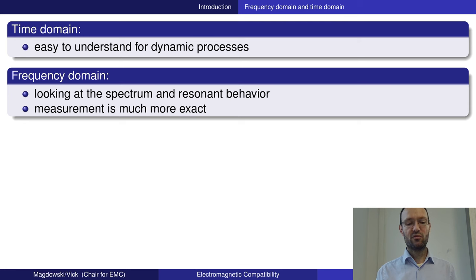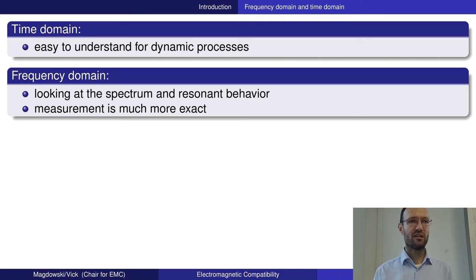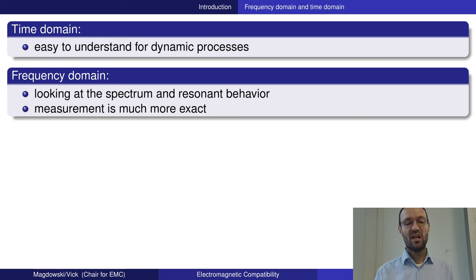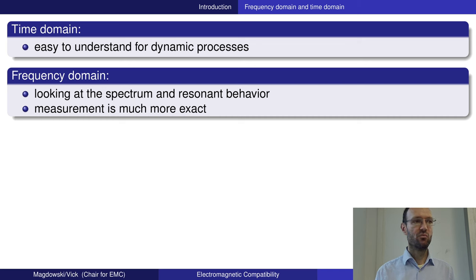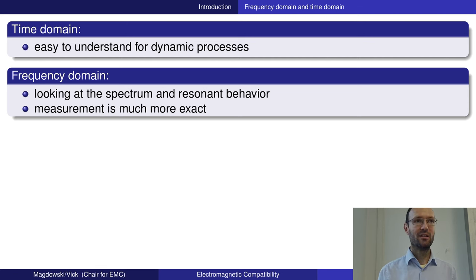If you have resonant systems like an RLC circuit, a cavity resonator, or a filter, it's usually more understandable to look in the frequency domain and check how the circuit or system reacts at different frequencies. Historically, measurements in the frequency domain — such as measuring signal spectra with a spectrum analyzer or transmission with a vector network analyzer — are usually more exact.